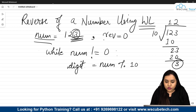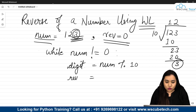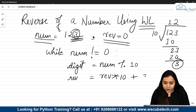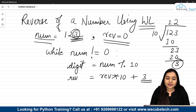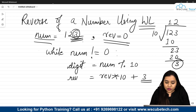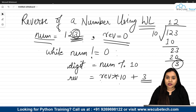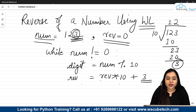After getting the digit, we add it to our reverse. Right now reverse is 0. We write: reverse equals reverse multiplied by 10 plus digit. We do this because we need to build the number digit by digit — for example, the first digit is 3, next time it will be 2, and we need 32, not 3 plus 2. So reverse becomes 3, then 3 times 10 plus 2 equals 32.